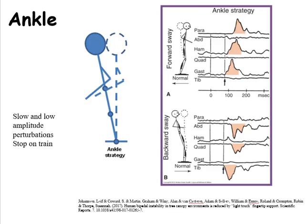The ankle strategy — I have a reference here if you'd like to look it up. If you're standing up, you can sway forward and backward and you are using the ankle strategy. It's for slow, low amplitude perturbations — maybe a gentle stop as you're coming into a station on the BART or the subway train. We can see EMG for gastrocnemius and tibialis anterior, so ankle plantar flexors and dorsiflexors, hamstrings and quads at the knee, and your paraspinals or erector spinae and abdominals near the hip.